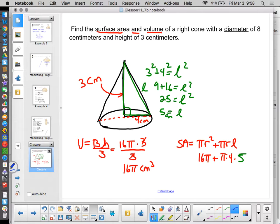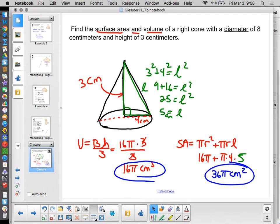So that's 16 pi plus 20 pi is 36 pi, and centimeters, because it's an area, squared.